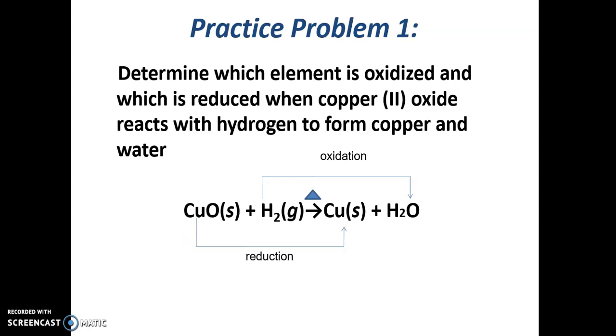In this chemical equation, copper oxide reacts with hydrogen gas to form copper and water. Copper oxide as a reactant loses oxygen in the product. This shows that copper oxide has gone through reduction.